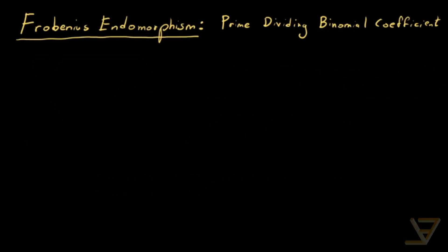Hi everyone. Let's talk about the Frobenius endomorphism, which is about primes dividing binomial coefficients. In general, we're going to be looking at the scenario where a divisor d divides the binomial coefficient n choose k. This is pretty hard to tackle in general, but we're going to find some partial results in the area.